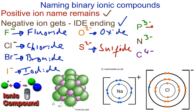Phosphorus would turn to phosphide. N would be nitride.